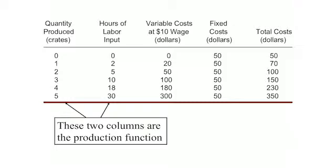Once you have the production function, you can think about the cost of production. Suppose it costs $10 an hour for workers. Then two hours of work costs $20, 10 hours costs $100, and 30 hours costs $300. This is the labor cost, shown in the third column, called variable costs because it varies depending on how much labor is used. There are also fixed costs — the amount the farmer paid in advance for the land — which don't change when you hire more or fewer workers. In this case, fixed costs are $50.